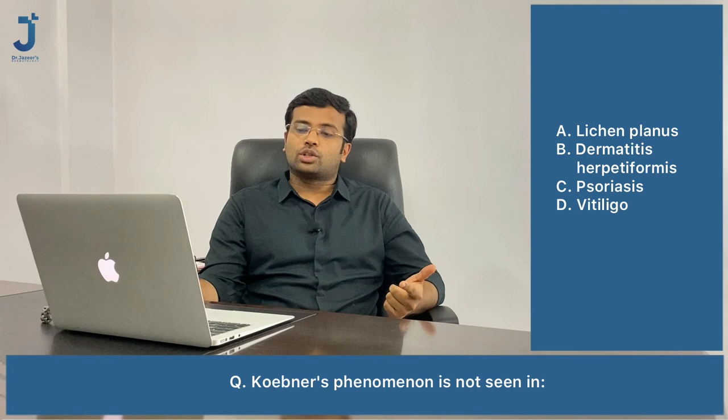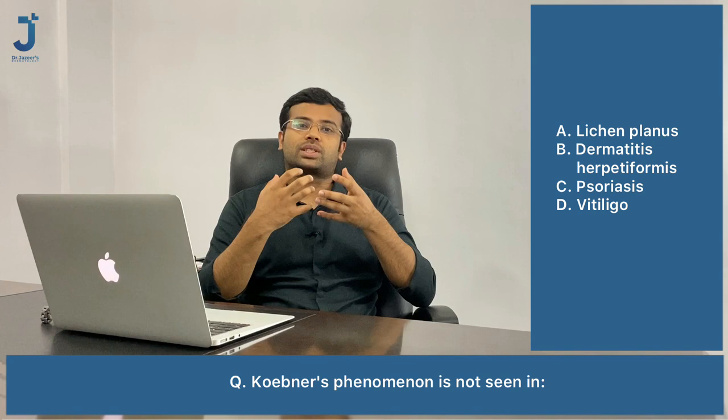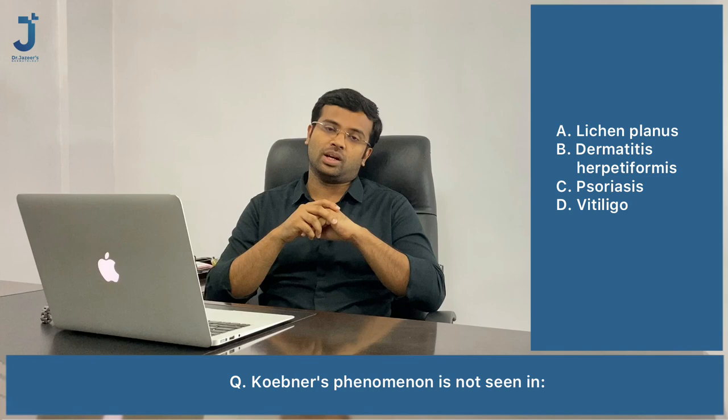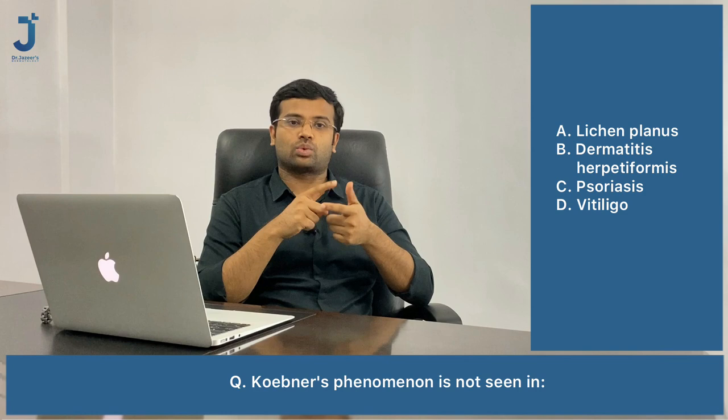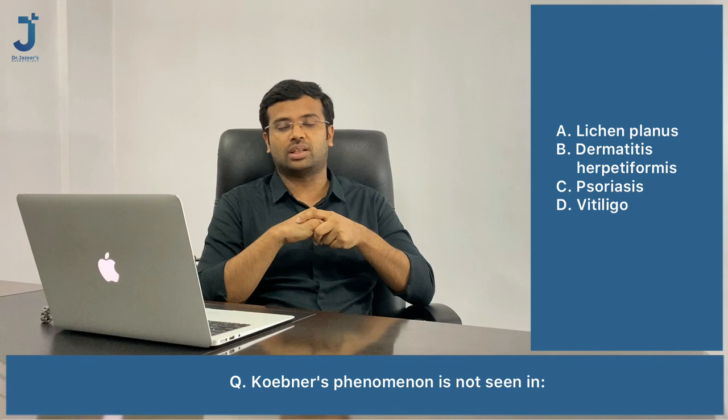Final question: Koebner's phenomenon is not seen in which condition? Options are lichen planus, dermatitis herpetiformis, psoriasis, and vitiligo. Koebner's phenomenon — also called the isomorphic phenomenon — is the appearance of skin lesions at the site of trauma. The diseases where it occurs can be remembered as LVP: lichen planus, vitiligo, and psoriasis. The odd one out is dermatitis herpetiformis, which is the answer.